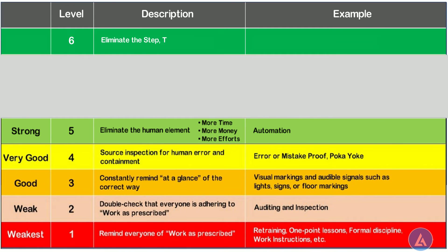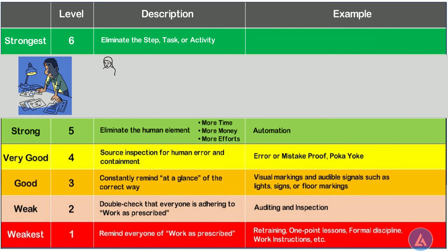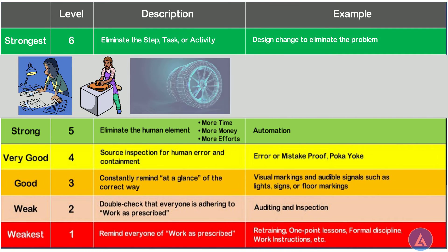Level 6: Eliminate the step, task, or activity. This is the best and strongest level of countermeasure. Countermeasures at this level require out-of-box thinking and creativity to eliminate the source of problem generation. The focus is on design change to eliminate the problematic step, task, or activity. An example is the elimination of tubes in tires to avoid frequent puncture problems by designing tubeless tires — the part is eliminated to avoid reoccurrence of the problem.